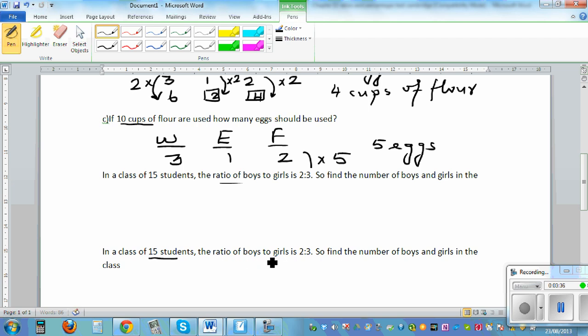In a class of 15 students, the ratio of boys to girls is 2 is to 3. So let me make up a table: Boys, girls, total. So what's the meaning of ratio? The ratio is 2 is to 3. That means for every 5 students, you've got 2 boys and 3 girls. That's what it means.